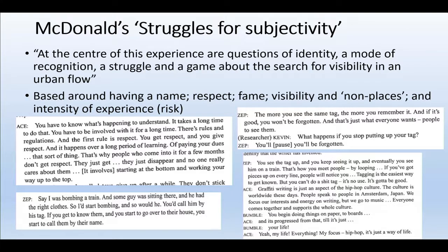McDonald includes interview quotes like: 'The more you see the same tag, the more you remember it. And if it's good, you won't be forgotten. That's what everyone wants — people to see them.' And Zep says: 'What happens if you stop putting up your tag? You'll be forgotten.' There's a kind of symbolic politics — an effective presence in public space by young people who feel they have no presence, who feel ostracised out of labour markets and education systems. And there's the subcultural community aspect: meeting someone on a train, recognizing them by their tag, and eventually calling them by their name. Rather than being a place of deviance, these subcultures are communities of people with similar backgrounds, similar problems, and similar tastes, forming communities of support to minimize risk and build social relations.